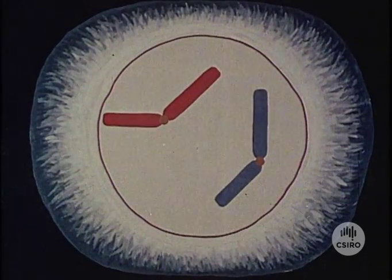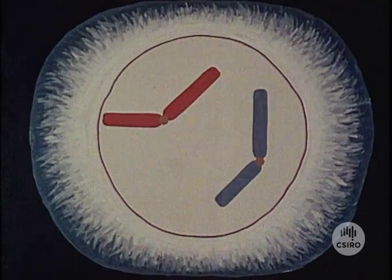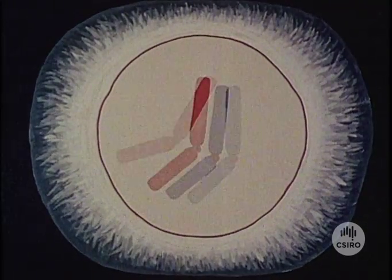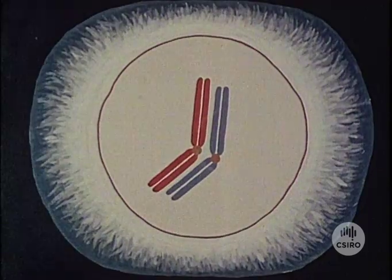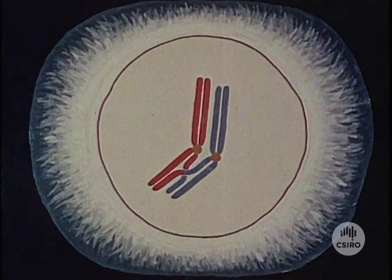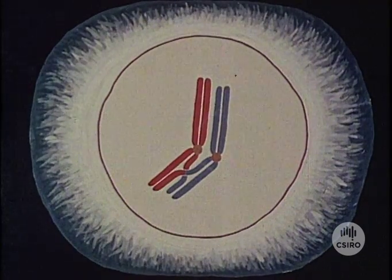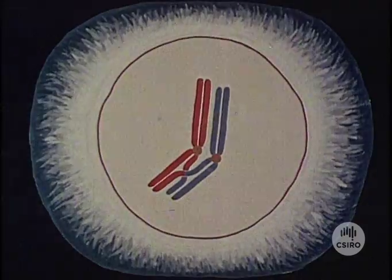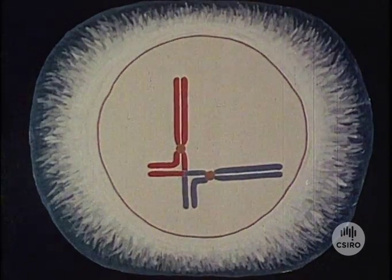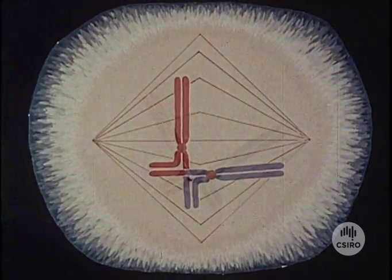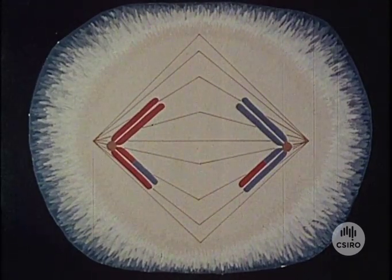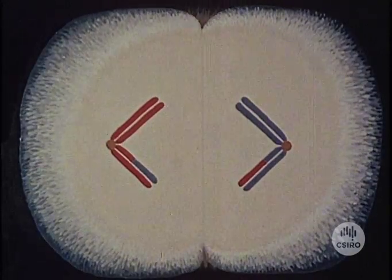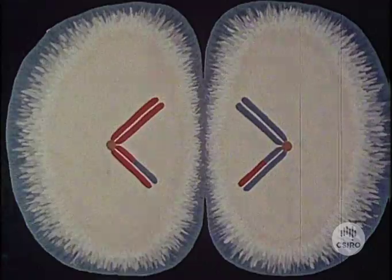Summarising meiosis, again we use a schematic cell and schematic chromosome movements. Firstly, the chromosomes pair. Each chromosome then splits into two except at the centromere. Crossing over occurs by breakage and reunion of adjacent chromatids. The pairs of chromatids then repel each other but are held together near the chiasma. A spindle forms and the chromosomes separate to opposite poles. The disappearance of the spindle and the formation of a cell wall complete the first division of meiosis. The chromosome number has been halved.